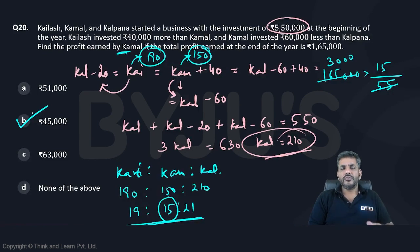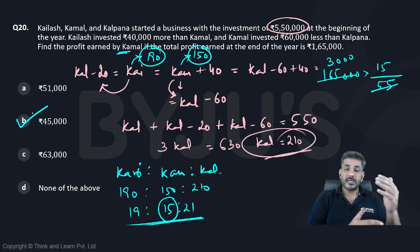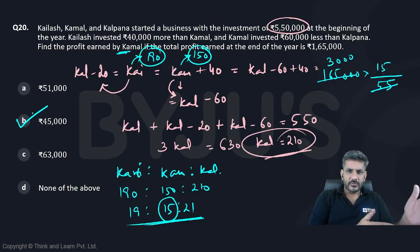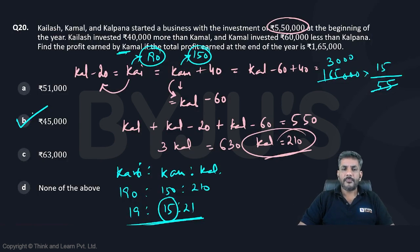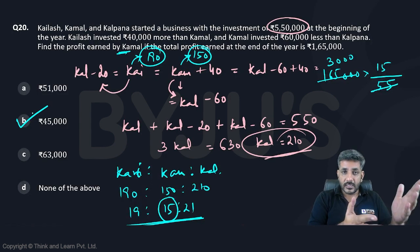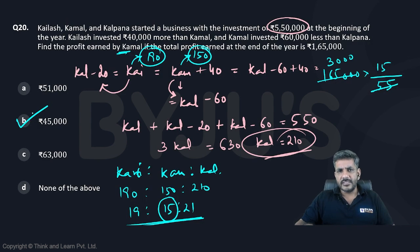This question goes slightly towards the moderate side because first you have to find out their individual investment shares, then find the ratio, and then calculate the shares of profit. Slightly towards the moderate side — otherwise I would say it was an easy question for all. Thank you.